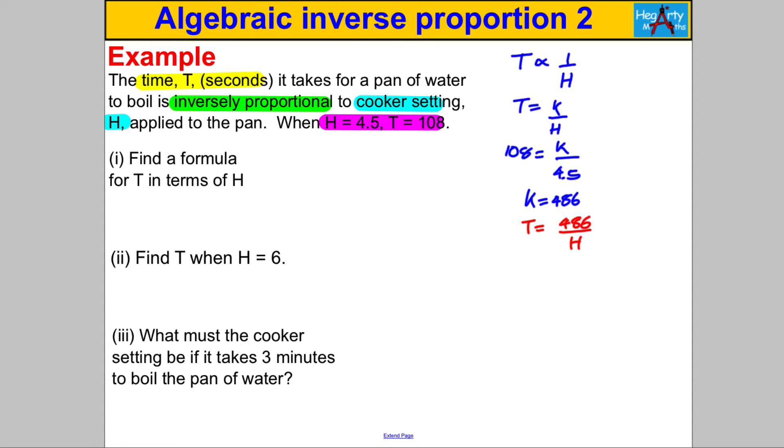It says find T when H is 6. That's nice and easy, you just say that T is therefore 486 divided by 6. You've just got to go away and work that out either by short division or calculator if it's a calculator paper, and you get yourself T is therefore 81.